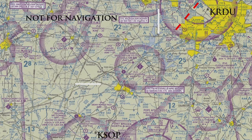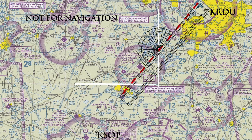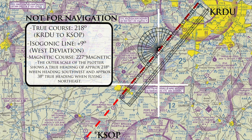Next we need to find out our true course. To do this we are simply going to line up the plotter with the course we have drawn. Make sure the plotter is lined up with the longitudinal line on the sectional. As you can see, if we follow the longitudinal line through the course plotter to the outer scale, our true course from Raleigh to Moore County is 218 degrees.